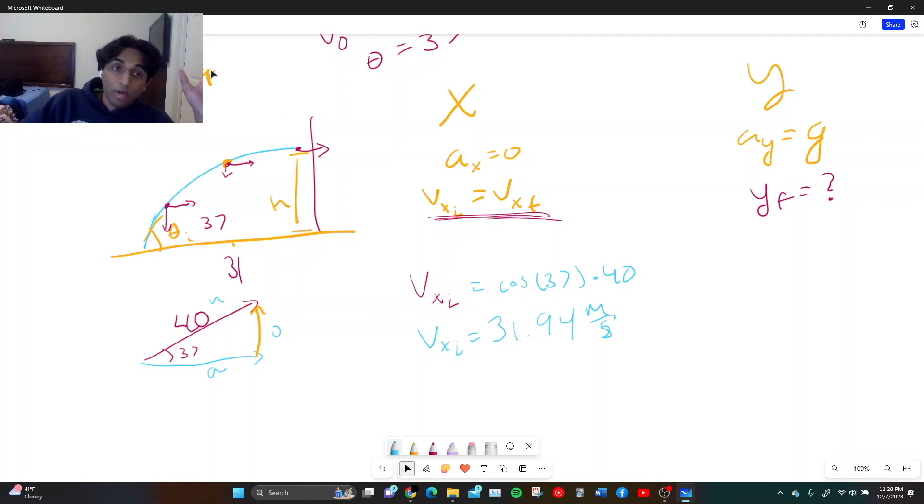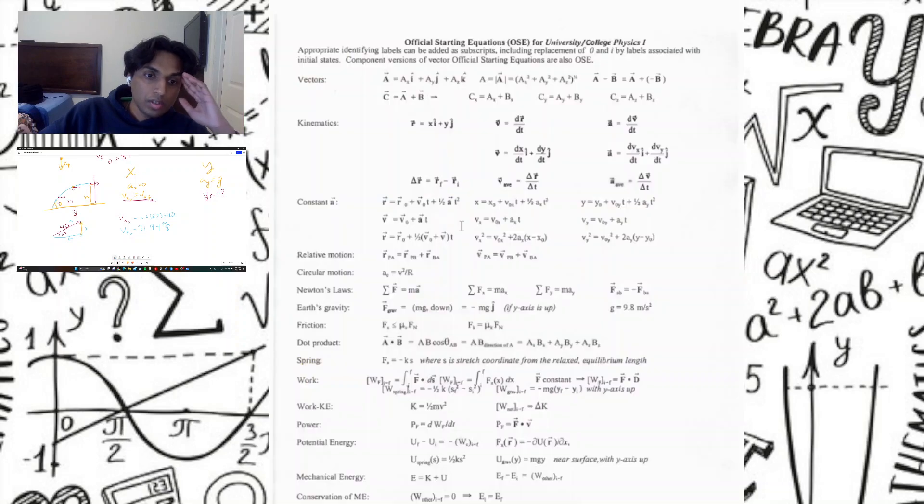Well, we know velocity initial is equal to 40 at an angle of 37. See where I'm getting at with this? This is trig. So velocity X initial is equal to adjacent opposite hypotenuse, SOHCAHTOA. You will get cosine of 37 times 40. That is velocity X initial. So velocity X initial is equal to 31.94 meters per second.